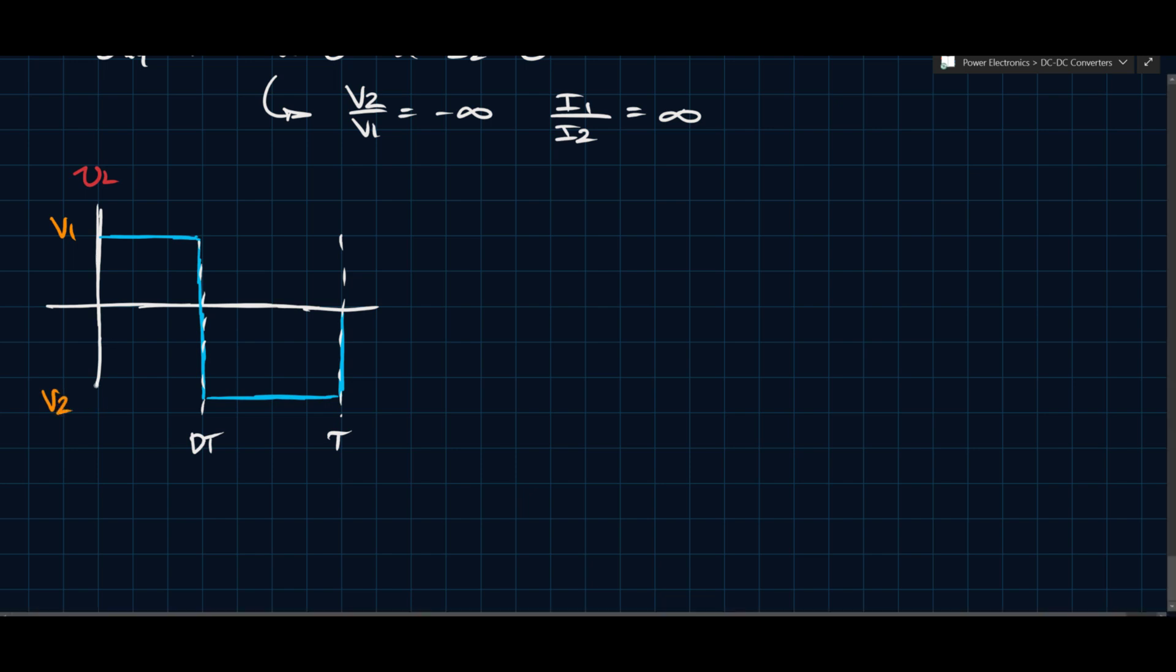So here we'll have, well, this whole thing is VL. Here we have V1, and here we have V2. And again, I'm not writing negative V2 or anything like that because it's kind of implicit in the variable, right? I'm not going to call it negative V2. I'll just call it V2, and we know that V2 has to be negative. And so if we look at this and we apply our volt-second balance, we see that V1 DT plus V2 times 1 minus DT must be zero. And that implies that V2 over V1 is equal to minus D over 1 minus D.